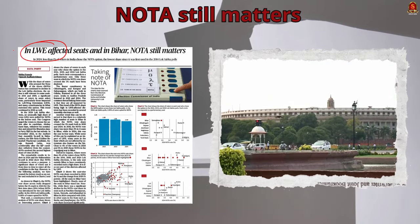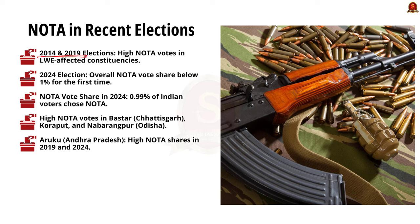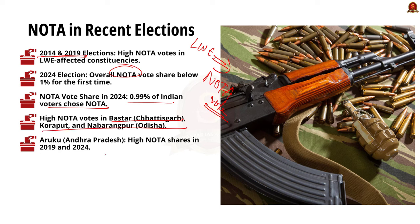In the 2014 and 2019 elections, many voters in specific constituencies affected by LWE — left-wing extremism — chose NOTA. This trend continued in the 2024 elections as well. Despite the overall decline, NOTA still plays a significant role in these specific regions. In the 2024 Lok Sabha election, the overall NOTA vote share across India dropped below 1% for the first time since its introduction in 2014; 0.99% of Indian voters chose NOTA. Bastar in Chhattisgarh, Koraput, and Nabarangpur in Odisha recorded high NOTA votes in the last three general elections. Araku in Andhra Pradesh showed a high NOTA vote share in 2019 and 2024. These seats are affected by left-wing extremism. High NOTA shares in LWE-affected districts have also been noted in various assembly elections.